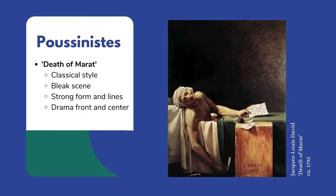Here we have the Death of Marat, a painting done in 1793 by Jacques-Louis David. It's depicted in a classical style and paints a very bleak and dramatic scene, placing drama front and center. It does so through hard lines and the gesture and position of the main subject — very straight and strong lines within the composition, nothing loose and free-flowing, all very stiff. That's exactly what the Poussinists went for, and Jacques was indeed a Poussinist artist.